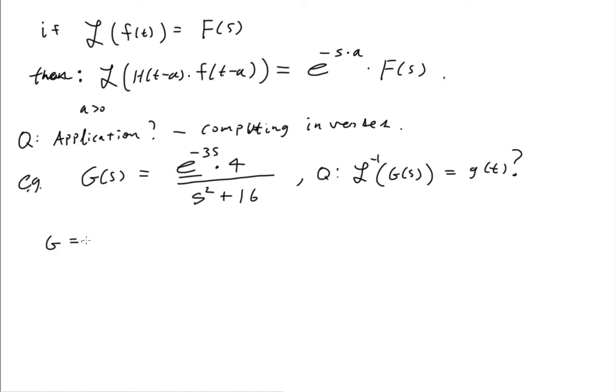Right. So I can write G then is e to the negative 3s times 4 over s squared plus 16. And this looks like the Laplace transform of sine 4t. And this is the idea that omega is equal to 4.